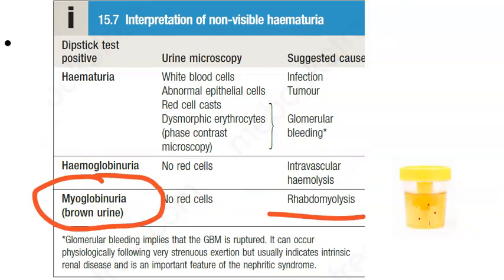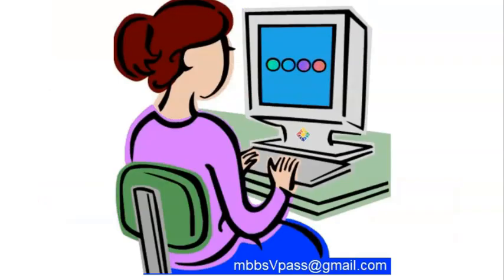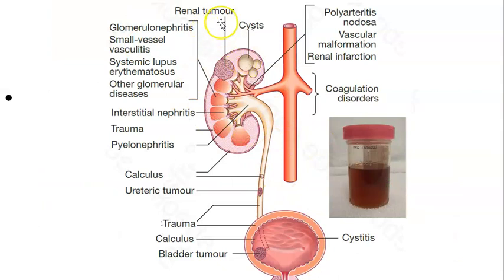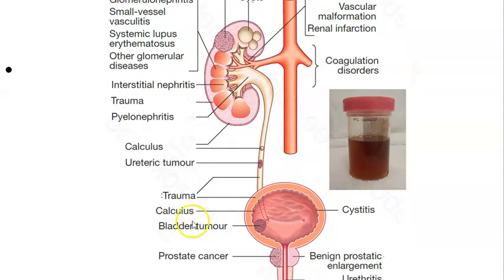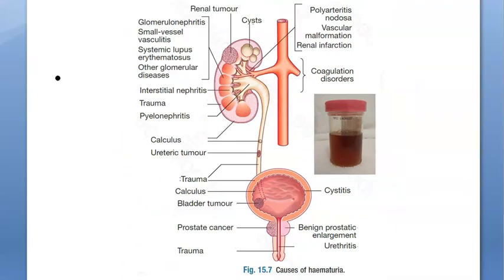Myoglobinuria means the urine will be brown. If it is brown urine, it could be because of rhabdomyolysis. Now let us look at all the causes in one diagram. We have renal tumor, nephritis - which means hematuria and proteinuria - and calculus. Trauma can also cause visible hematuria. Calculus appears three times: renal calculus, ureteric calculus, and bladder calculus.